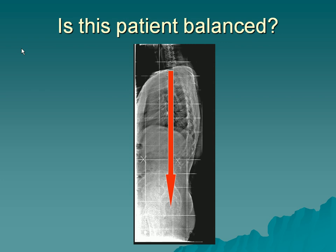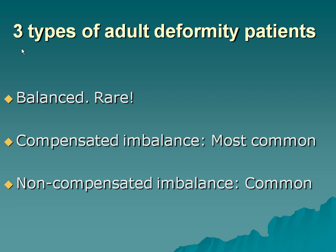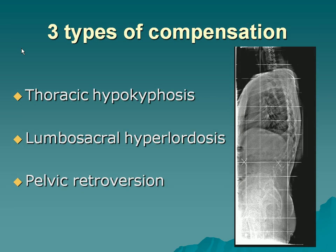The C7 plumb line goes directly to the posterior corner of the sacrum — yet I claim that she's not balanced. She has a spinopelvic malalignment that is obvious. You see the typical thoracolumbar kyphosis, the flattening of the thoracic spine, and lumbosacral hyperlordosis. Compensation occurs through thoracic hypokyphosis, lumbosacral hyperlordosis, and pelvic retroversion — which may be difficult for some to understand, but I'll explain it in simple terms.